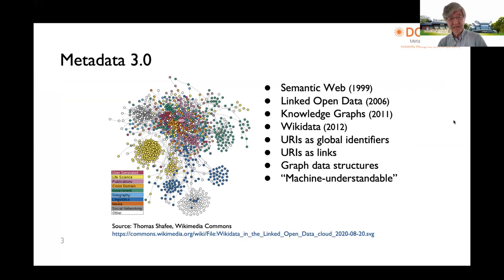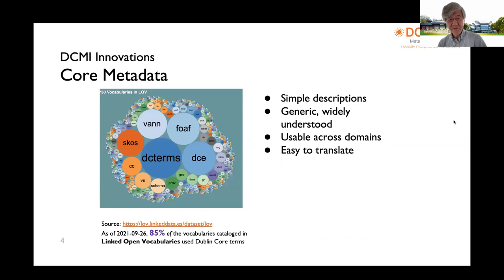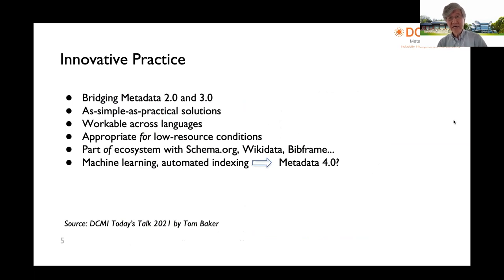The Dublin Core community has been instrumental in advancing metadata and has been a core member of the semantic web, linked open data, knowledge graph, and Wikidata communities. Dublin Core has always been a frontier in using URIs as global identifiers — persistent, consistent — and using URIs as links for graph data structures and machine-understandable data. Among linked open vocabularies, 85% of them use Dublin Core terms.